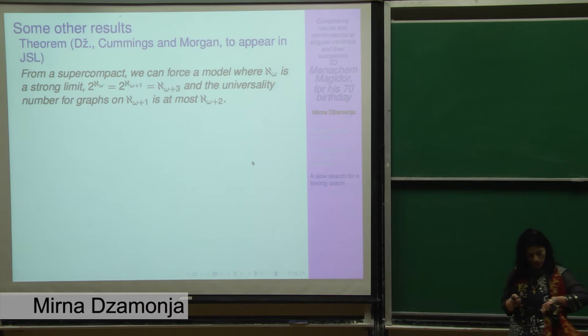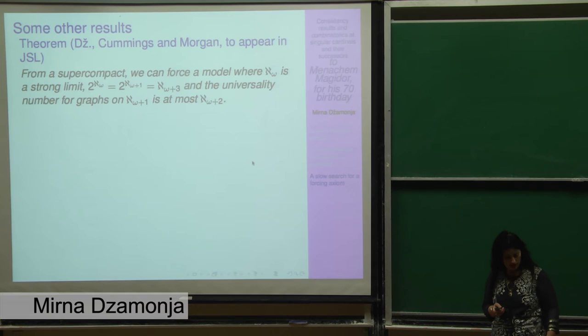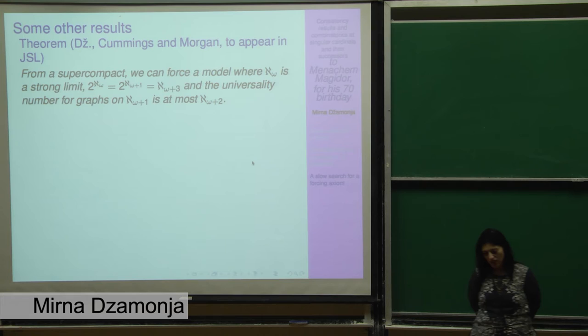So let me also now mention some other results that do not have to do always with universality, but some other results in this context. In a paper that we did with James and Charles Morgan, we can push our results from an arbitrary singular cardinal to aleph omega. So we get that aleph omega is a strong limit. 2 to the aleph omega is 2 to the aleph omega plus 1 is equal to aleph omega plus 3. But the universality number for graphs on aleph omega plus 1 is at most aleph omega plus 2. So this is kind of a machine, a complicated machine that is made for changing results that you might have for an arbitrary cardinal of countable cofinality to aleph omega. This is called pushing things down to aleph omega.